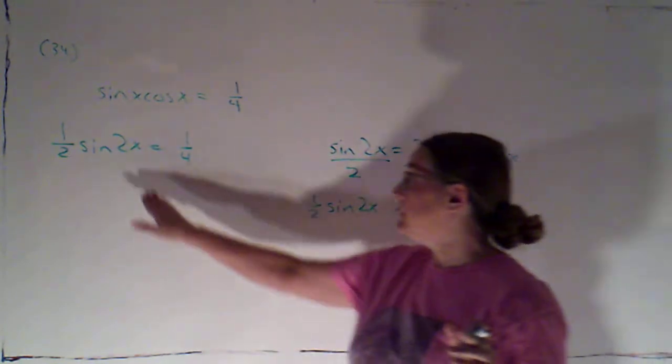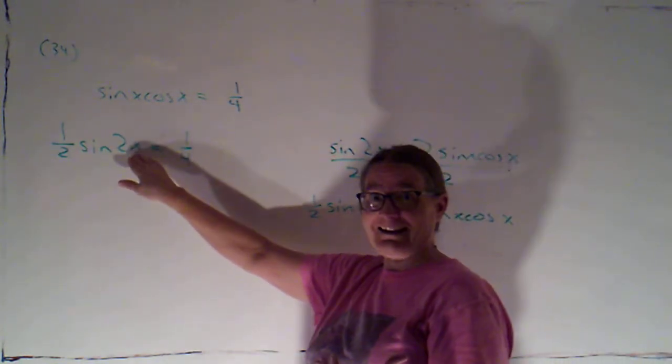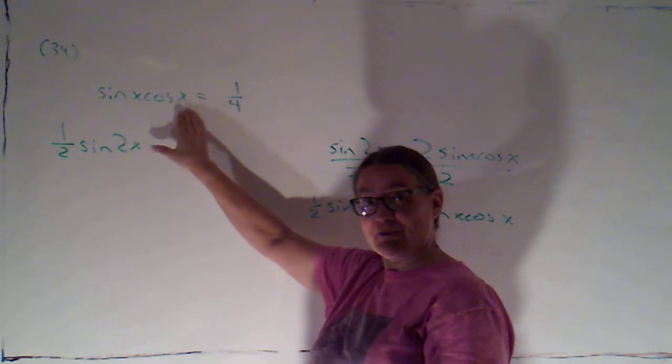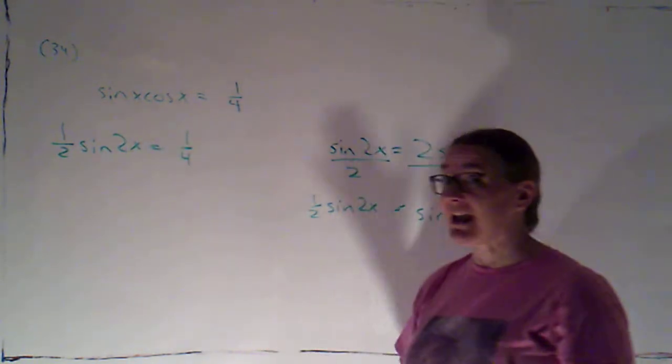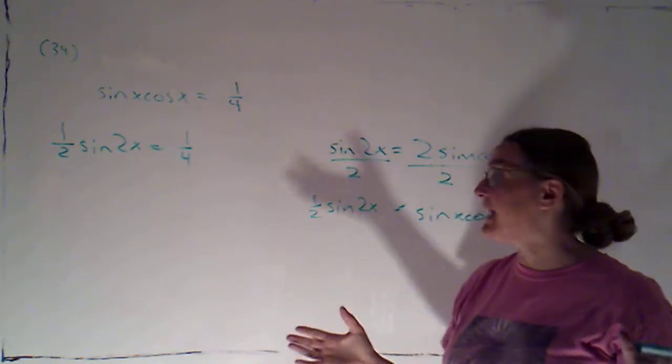I've got one-half sine 2x equals one-fourth. Now I have just one angle. Now it happens to be a more complicated angle. We went from x, which is the simpler angle, to 2x, which is the more complicated one. But that's okay, because I'd rather have just one angle.